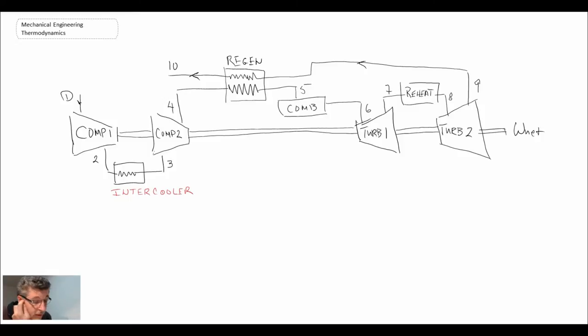There is our process schematic and you can see what we now have is multi-stage compression. We have compressor one, compressor two, and we have multi-stage expansion, turbine one, turbine two.